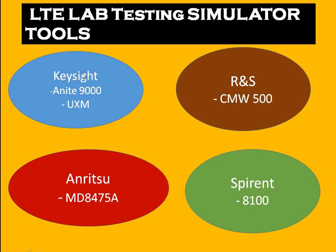The first company is Keysight. Keysight has a tool called UXM, which is used to validate chipset testing like camping procedures, cell selection, reselection — basic stuff you can do in the UXM simulator. Recently, Keysight acquired Anite, which is a big company. There is a product called Anite 9000 with which you can create automatic scripts, perform various kinds of validation testing, and do R&D as well. With UXM, however, you cannot do this R&D kind of work.